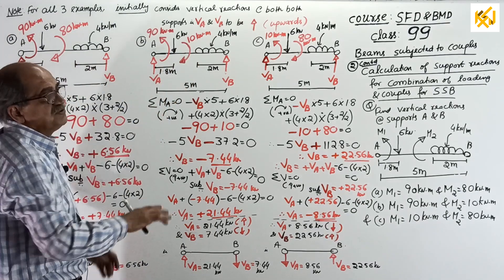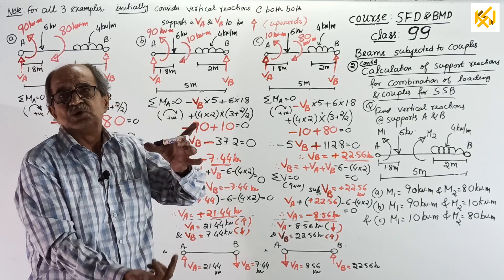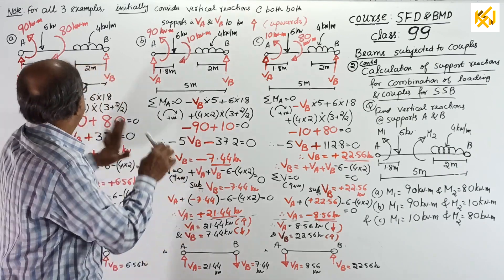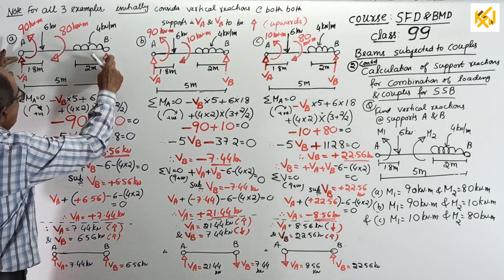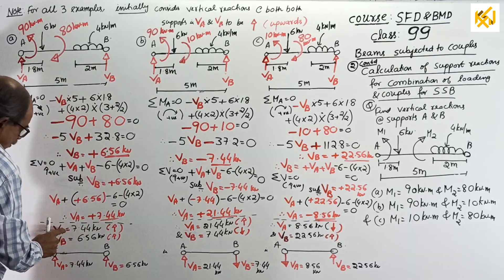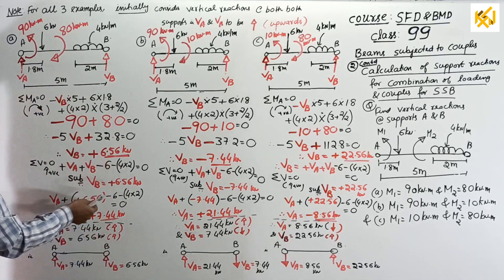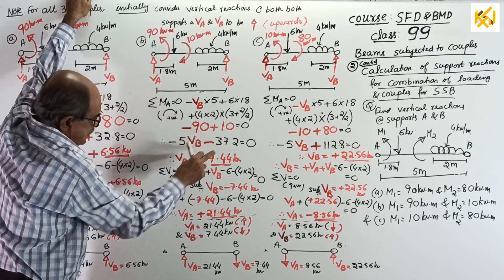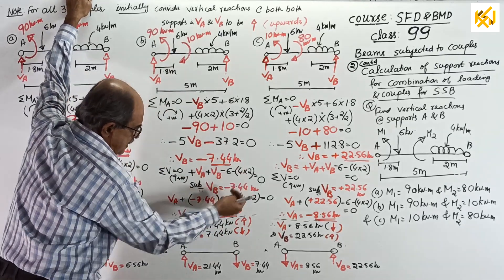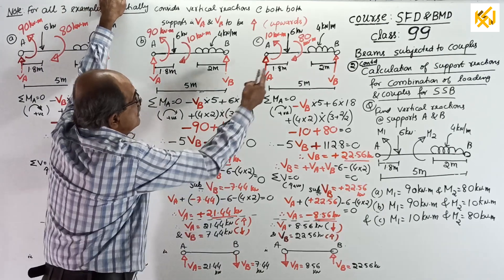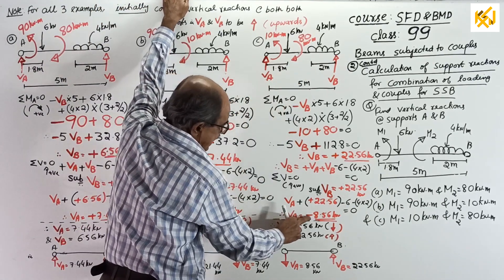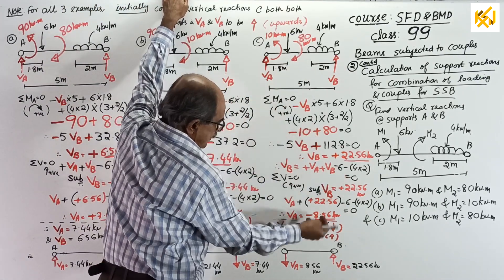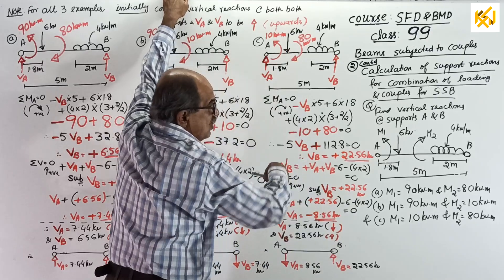Therefore, see, all three examples, we assumed both reactions to be upwards. First question. Example 1. Both came positive. Therefore, VA, VB, both are upward. Second example. We got VB negative, VA positive. So, VA is up, but VB is down. Last example. We got VA negative, VB positive. So, VB is up, VA is down.